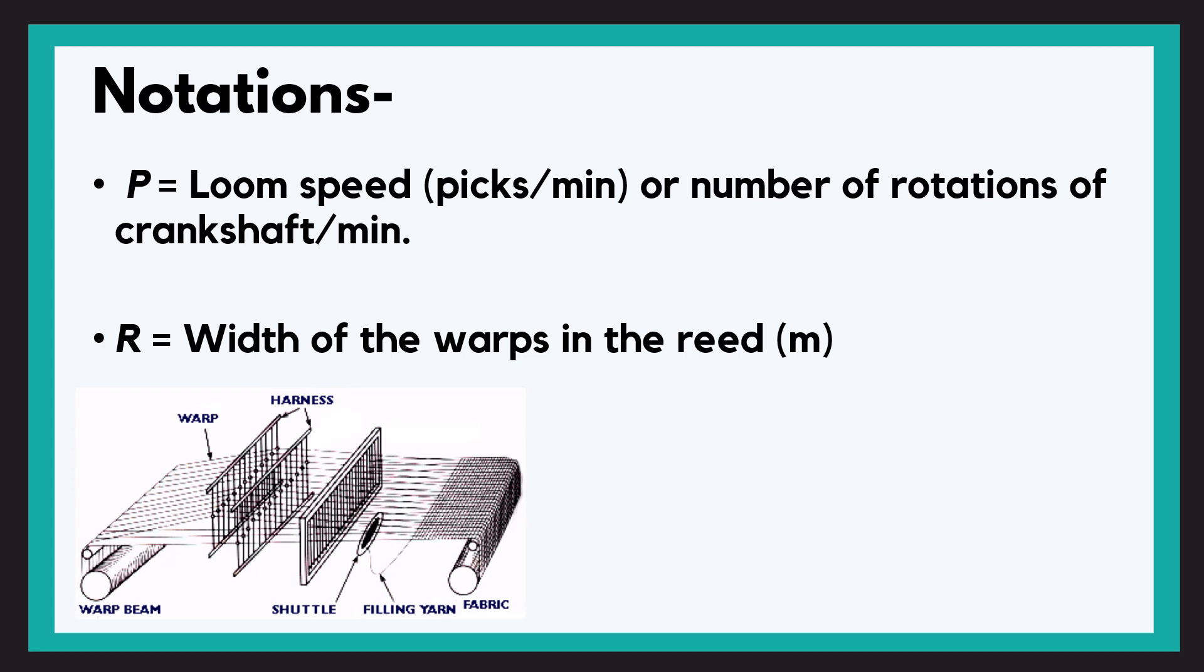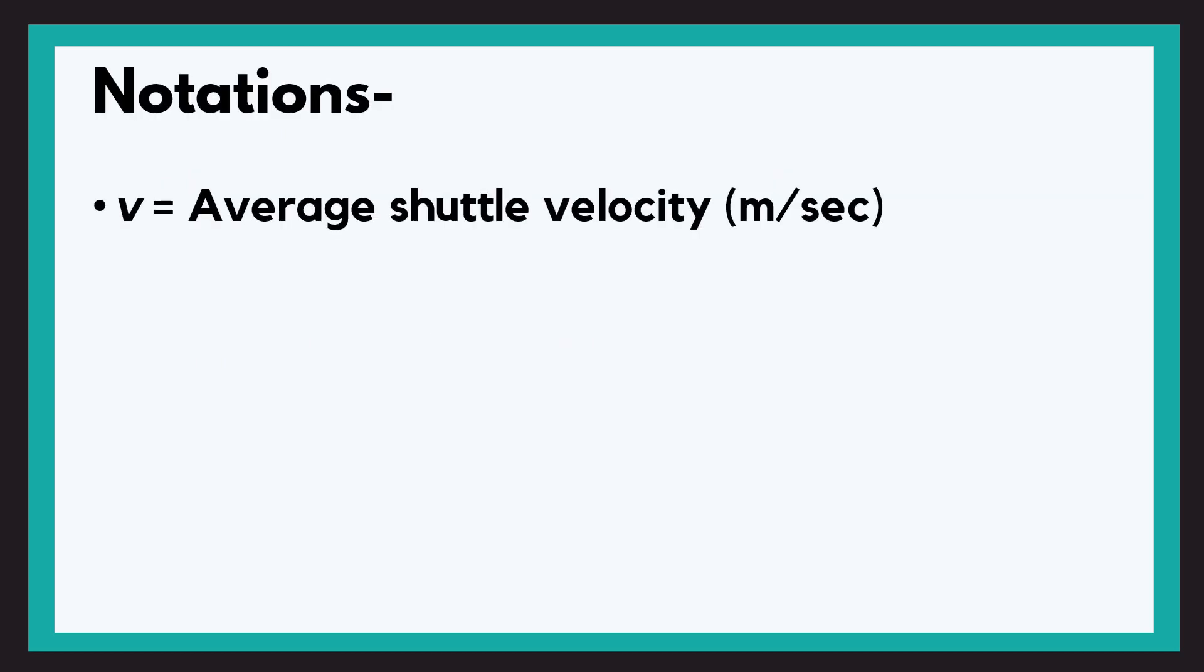So now we know P and R. Moving further, V which is the average shuttle velocity which we have to find out. L which is the effective length of the shuttle, because the shuttle has a certain length, isn't it?